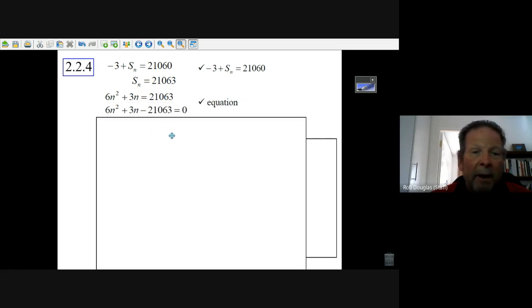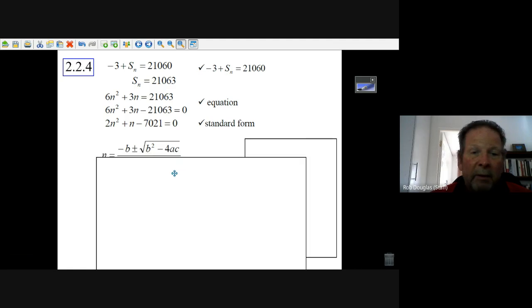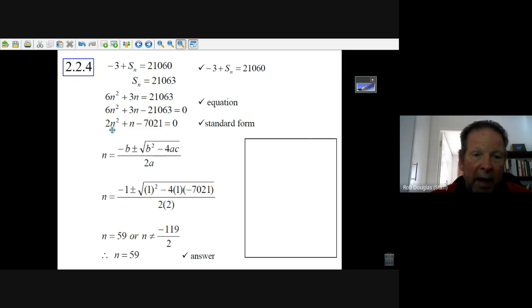Well, we subtract there. We divide everything by 3 to make it a little bit easier. And then you can just use the quadratic formula. Now, you don't have to write in the quadratic formula like this. So A is 2, B is 1, and C is negative 7,021. But if you put that in that you're calculating the quadratic formula, with the plus, you get the number 59.